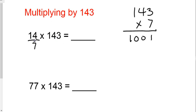So I'm going to divide this number by 7, and I get 2. Since I divided this one by 7, I have to multiply this one by 7. I've already figured out that 143 times 7 makes